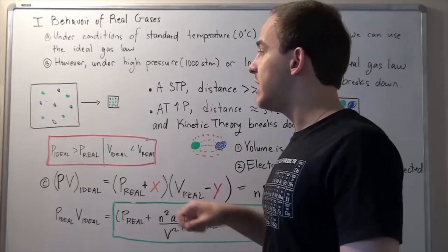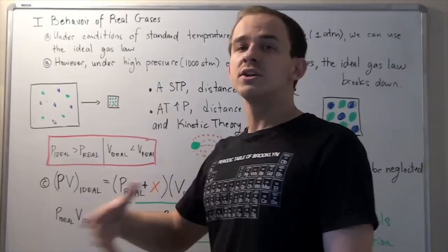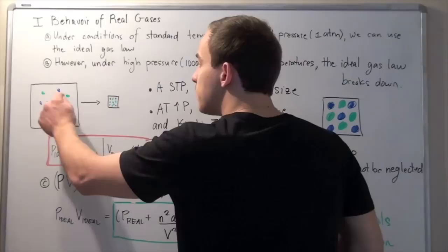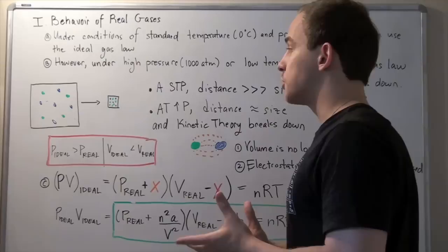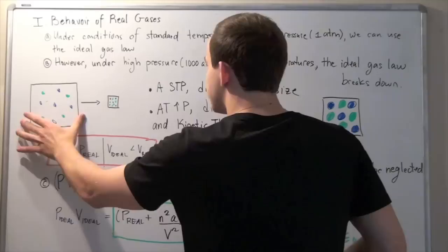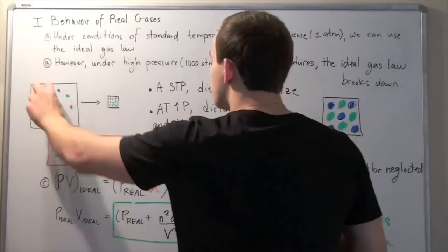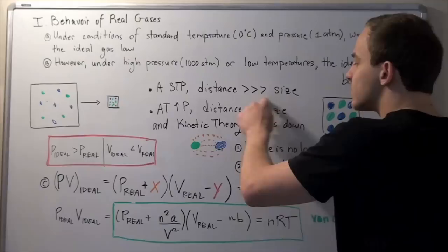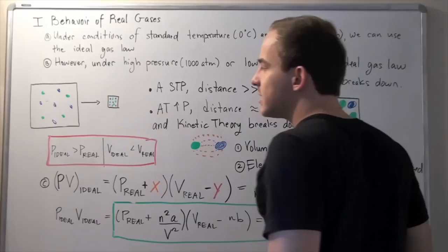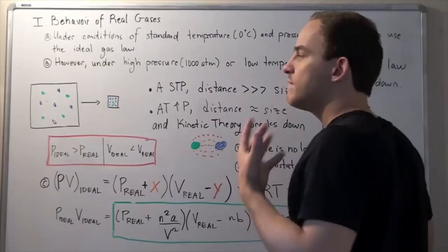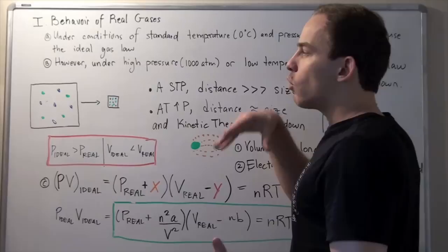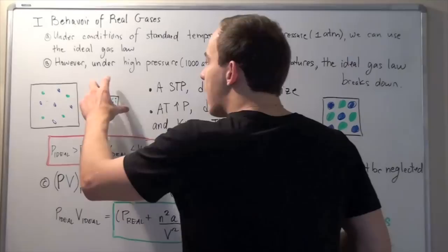Let's see why this happens and what breaks down. Suppose we have a system with nine molecules under constant temperature and pressure of 1 atm. At standard temperature and pressure, the distance between any two molecules is much larger than the size of the actual molecule itself. That means we can use kinetic theory to approximate how this behaves, because if the distance is large, we can assume the volume of the molecules to be very small and assume they don't attract or repel each other.